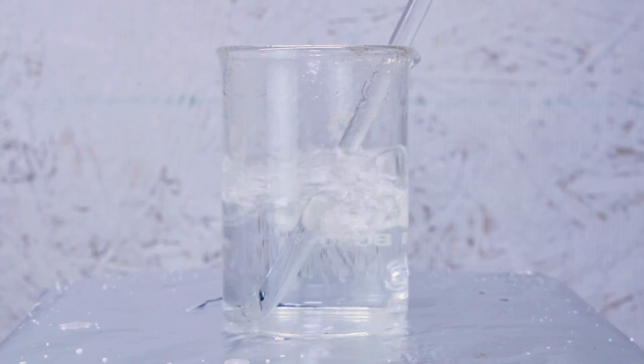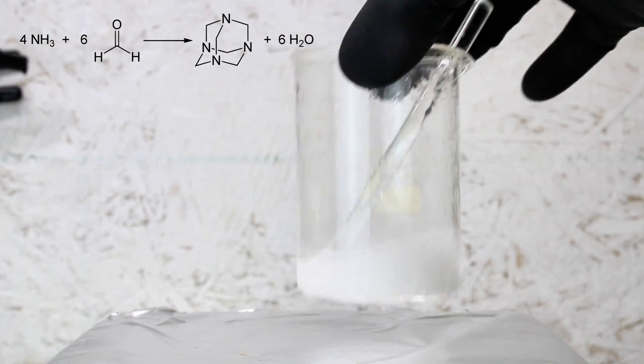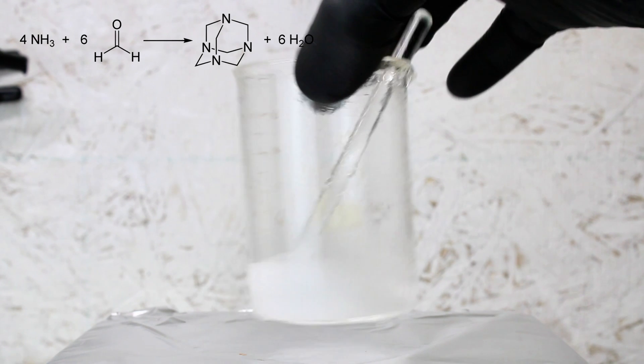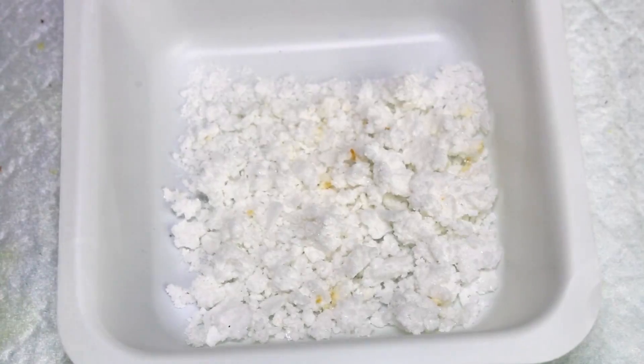Now the net reaction here is four ammonia molecules and six formaldehyde molecules forming one hexamine molecule and six molecules of water. However this reaction obviously doesn't take place in one step, and the formation of hexamine is actually a series of different rearrangements.